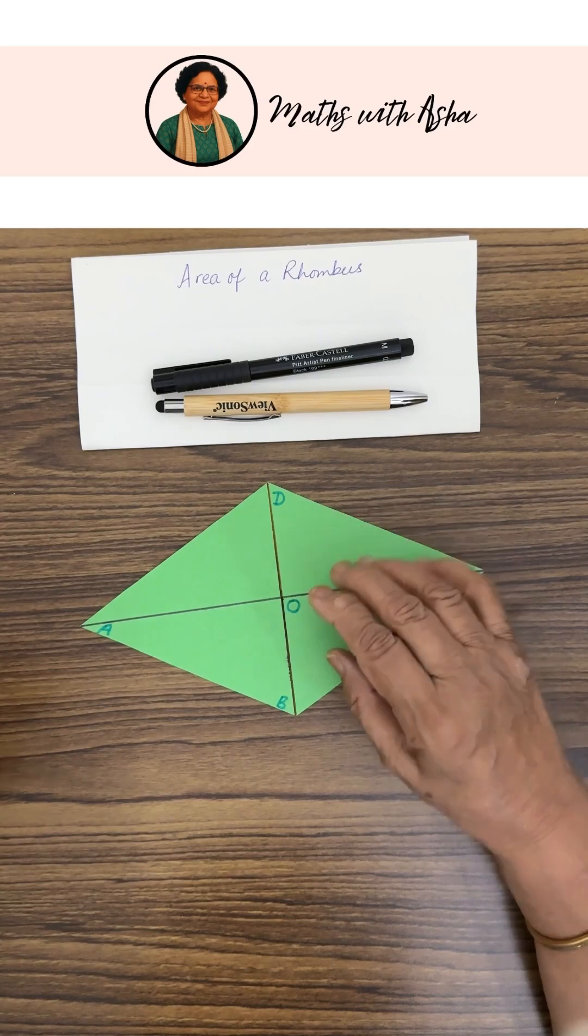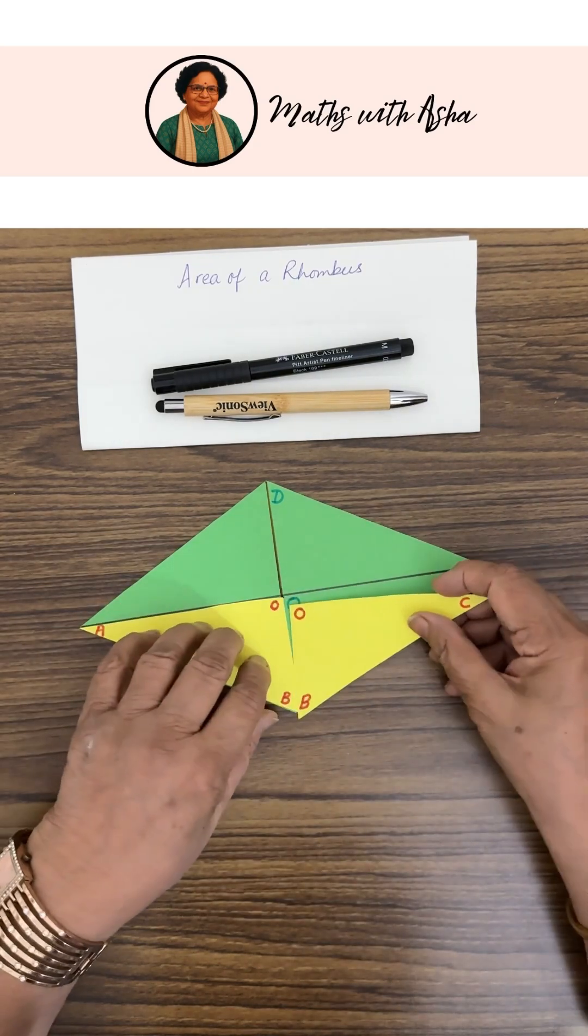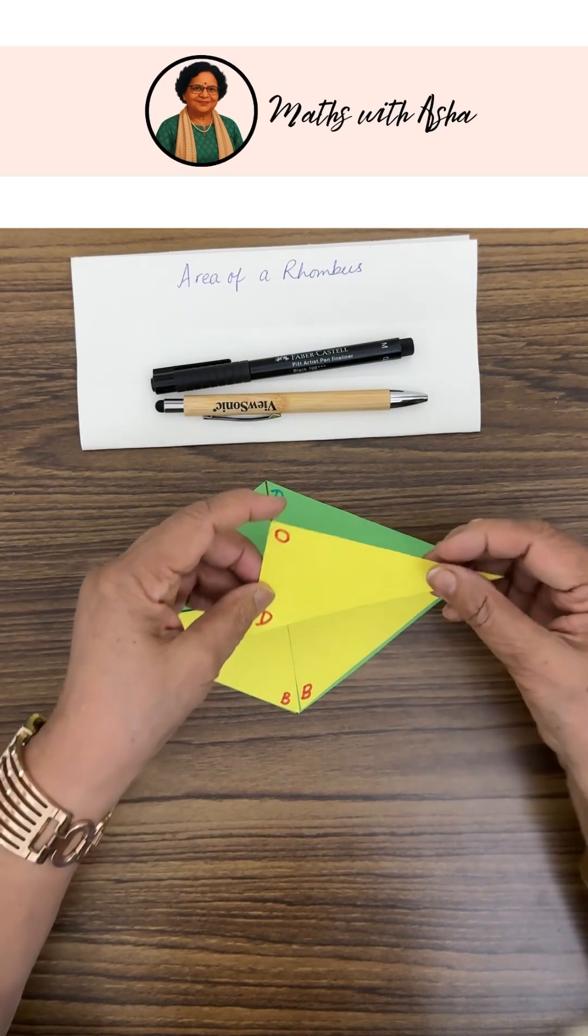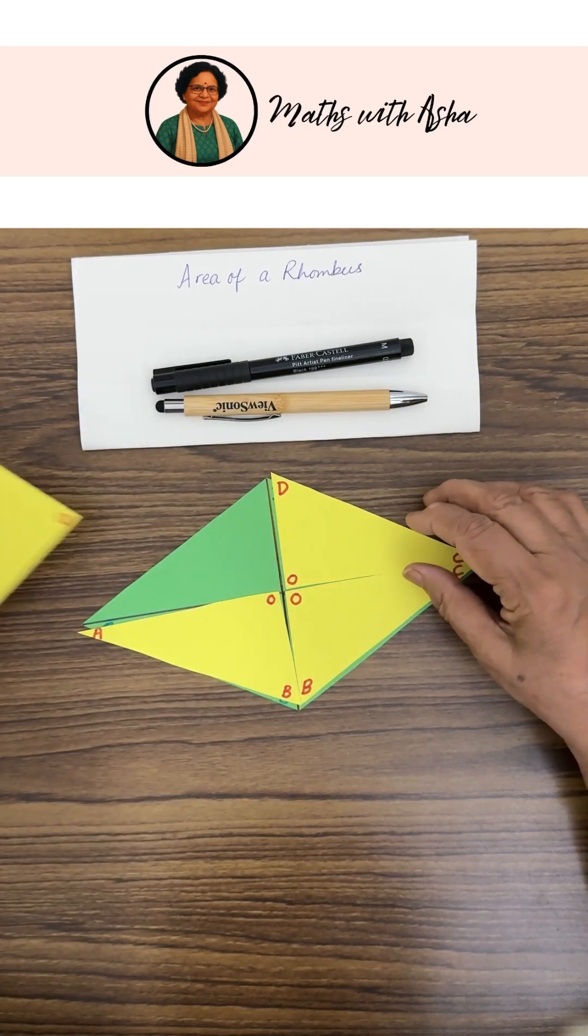So these are the four triangles which we can fit: AOB, BOC, COD, and DOA.